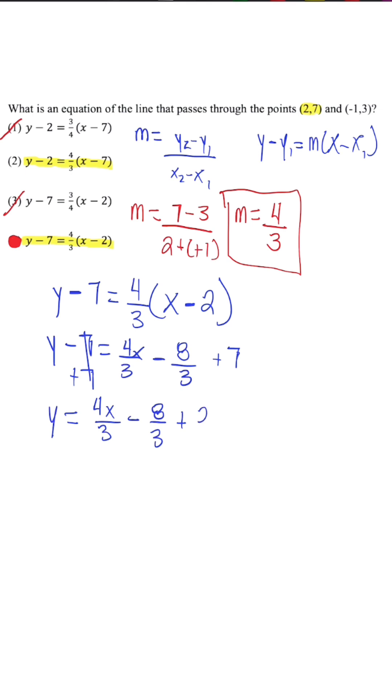we can rewrite 7 as 21 over 3. And then we just need to combine our like terms. So when we simplify, the equation would be y is equal to 4 over 3x plus 13 over 3.